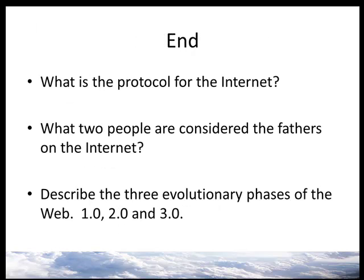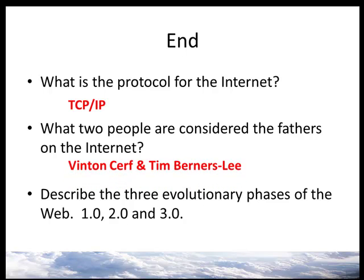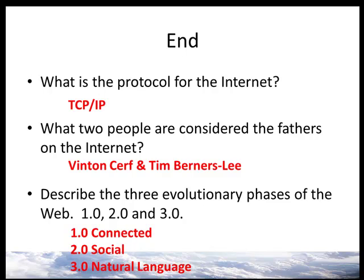Quiz time! What is the protocol for the internet? TCP/IP. What two people are considered the fathers of the internet? Vinton Cerf and Tim Berners-Lee. Describe the three evolutionary phases of the web: 1.0, 2.0, and 3.0. Web 1.0 is connectedness for communicating, buying things, and getting information. Web 2.0 is the social internet where people's communication can add value or create new products. Web 3.0 is the semantic or natural language web — it still needs a lot of work.